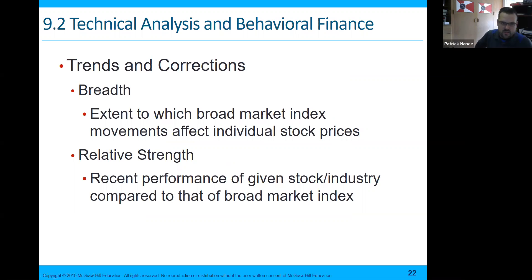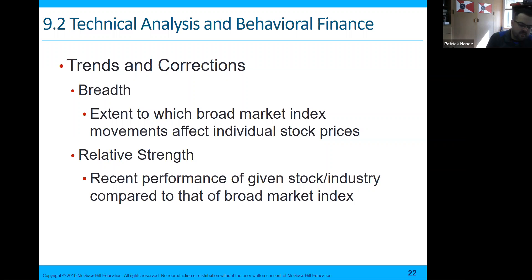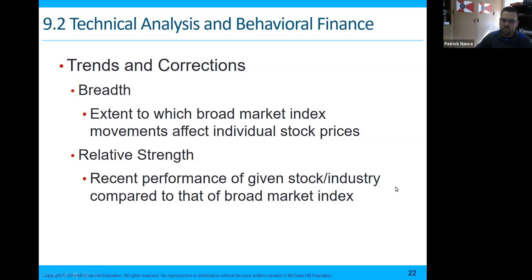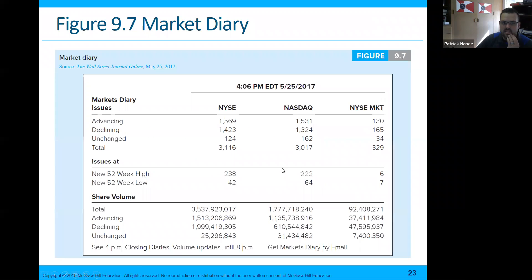More trends and corrections. The breadth is the extent to which broad market index movements affect individual stock prices — how much does the market index affect your stock price? It's almost like creating a beta for whatever investment stock you have. Relative strength is the recent performance of a given stock or industry compared with that of the broad market index — how did your stock perform compared to the industry and also to the broad market indexes?